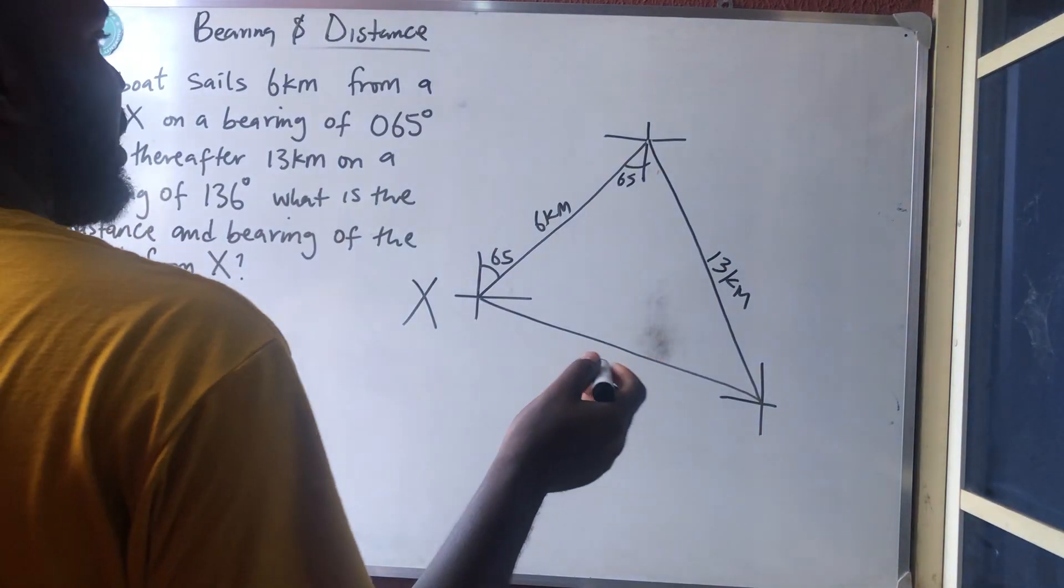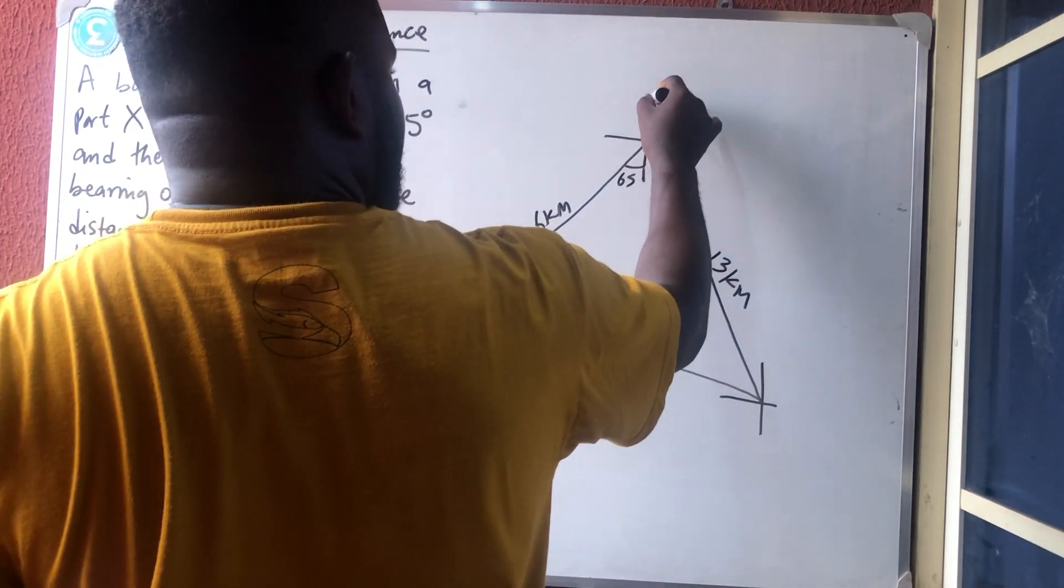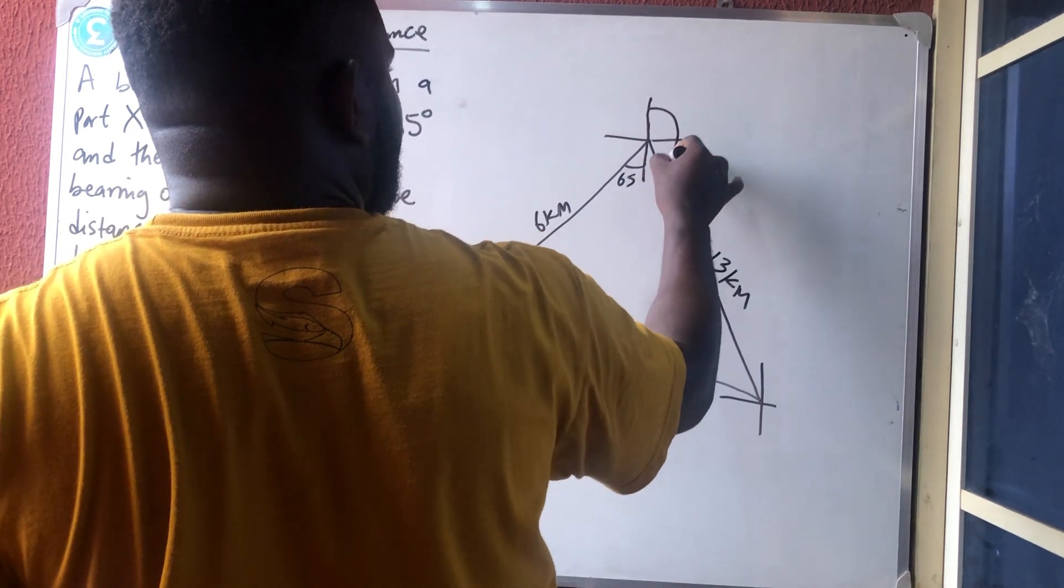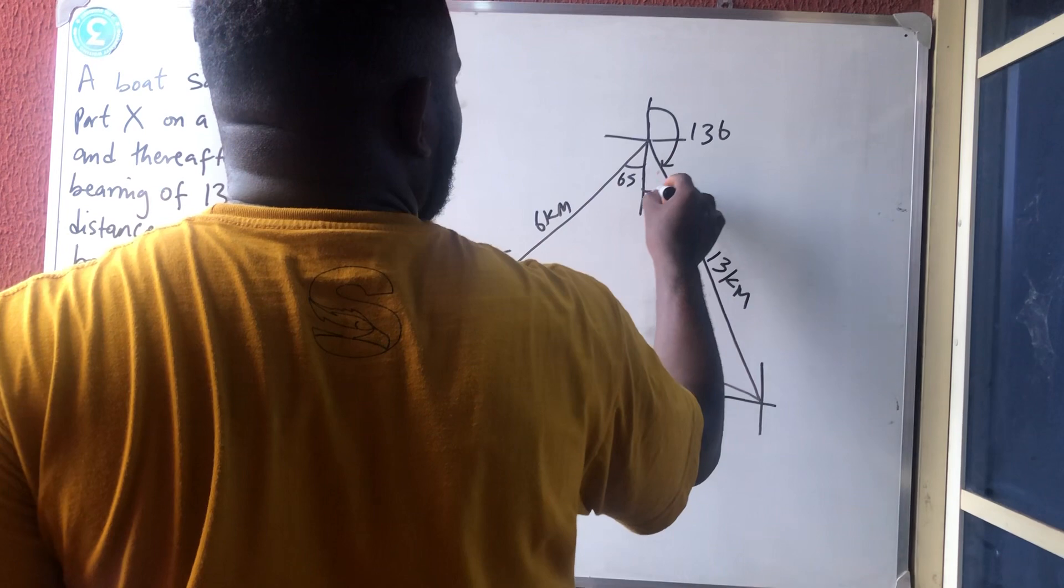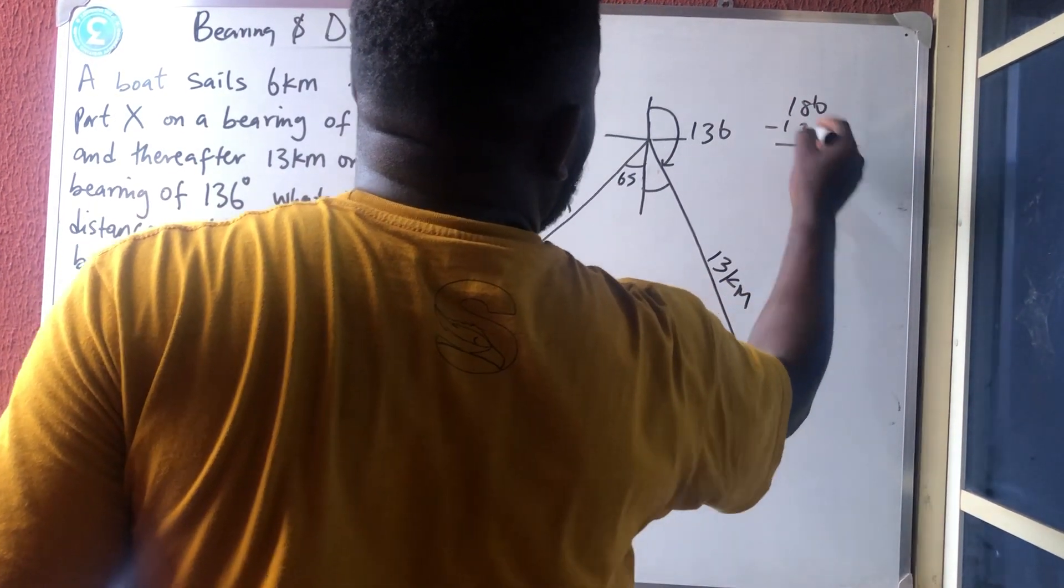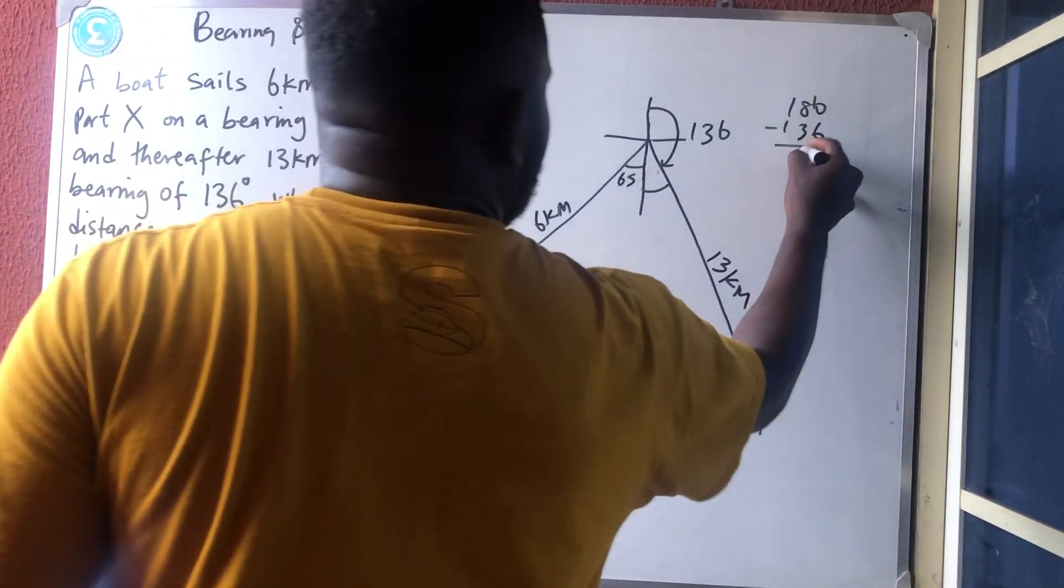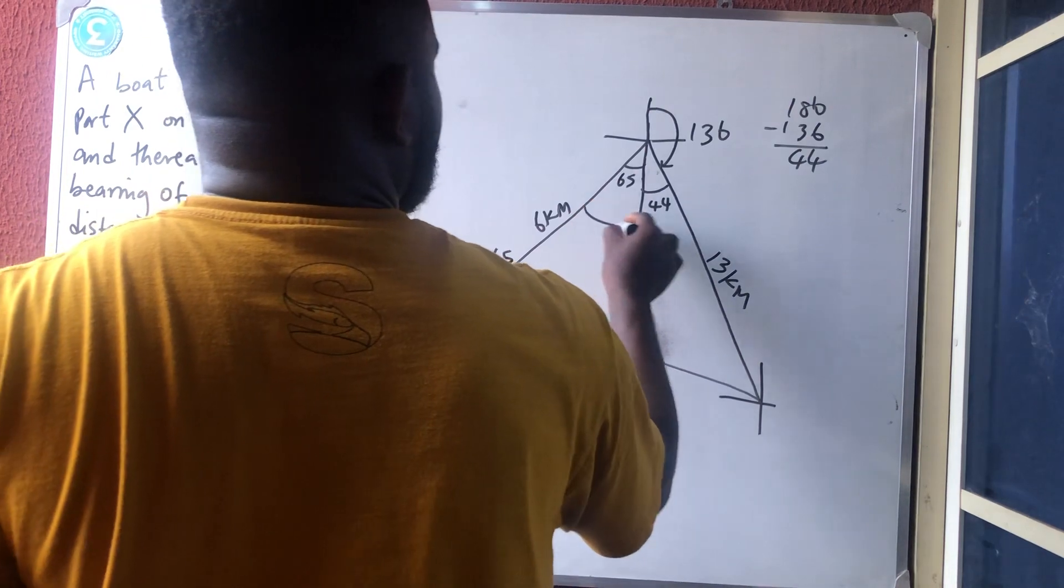You see, you are done. Bearing is very simple. So the 136° starts here now. Starting from the north, you touch here, is that 136°. So the remaining side should be what? 180 minus 136. So from here to here will give you 109°.